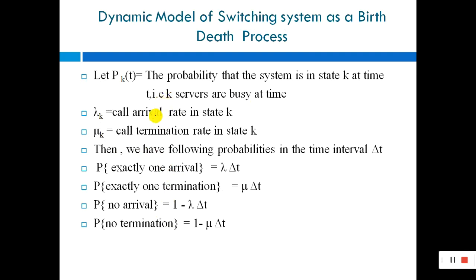Now we look at the dynamic model of a switching system as a birth-death process. Let P(K,T) be the probability that the system is in state K at time T, where servers are busy at time T. Lambda_K is the call arrival rate in state K, and mu_K is the call termination rate in state K.